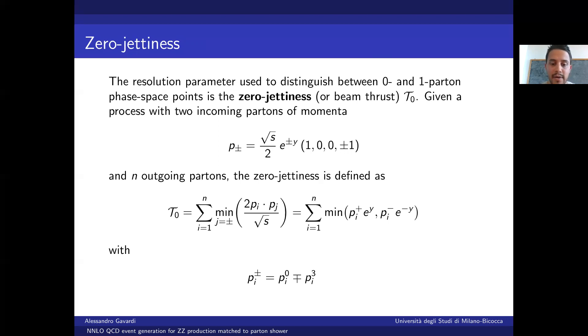The terms appearing in the sum are basically a scalar product between the momentum of the final state parton and one of the momenta of the initial state partons, so that any final state parton which is soft or almost collinear to the beam will give a small contribution to that sum, thus leading to a small value of tau0.